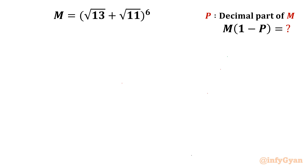Welcome back to Infigyan friends. In this video we are going to take up one very interesting question from algebraic expressions. We have to simplify or evaluate the expression m times (1 minus p), if m is (square root 13 plus square root 11) whole power 6, where p is the decimal part of m.